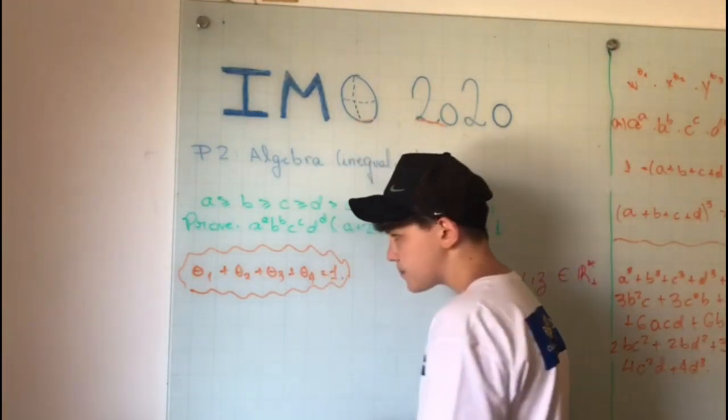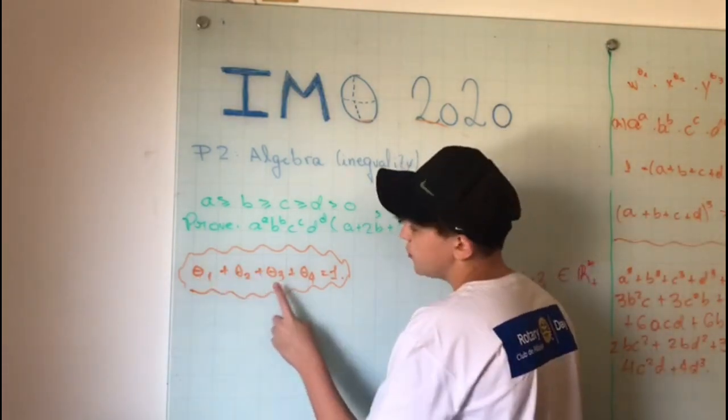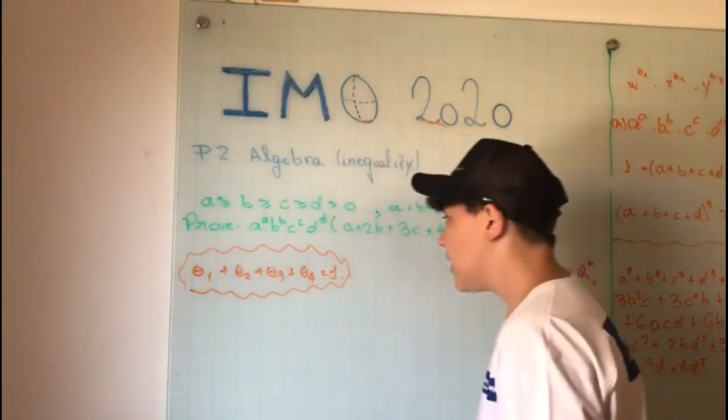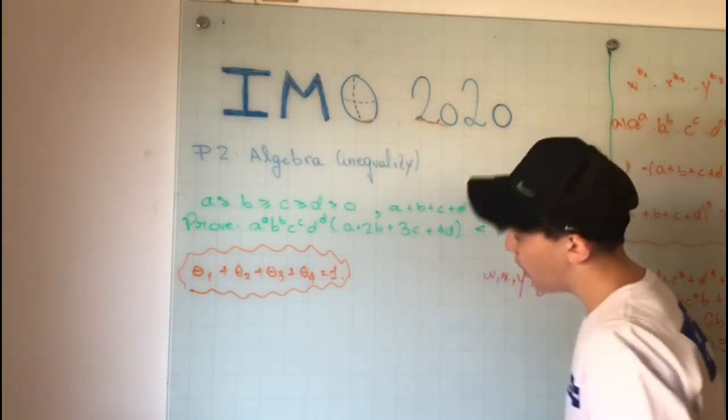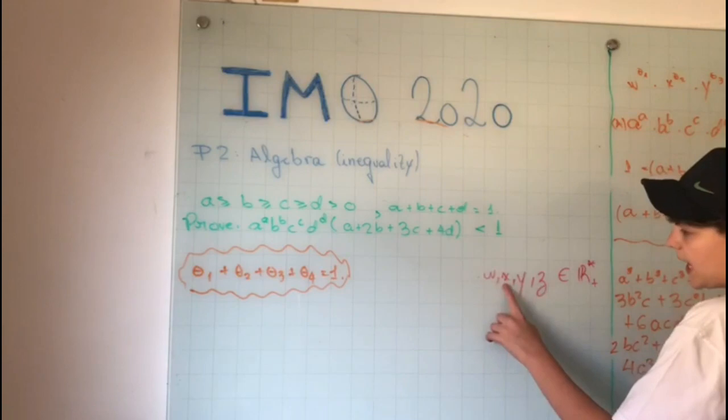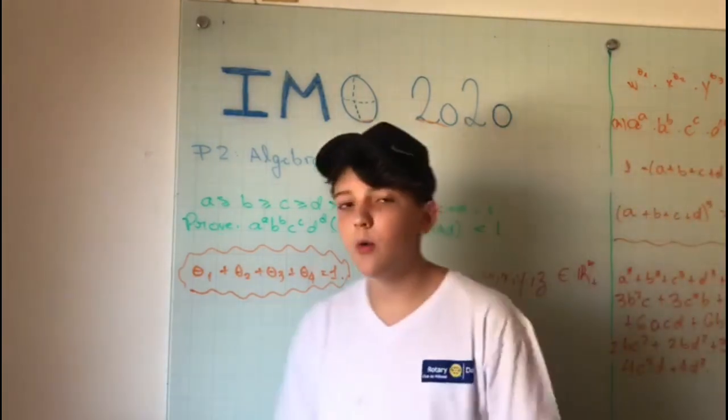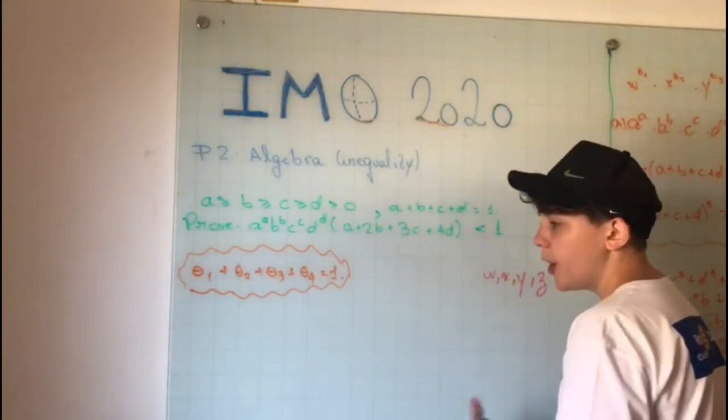We'll use the AM-GM weighted average inequality, which says that if θ₁, θ₂, θ₃, and θ₄ are four real numbers which sum up to 1, and w, x, y, and z are four real positive numbers, we have the following inequality.